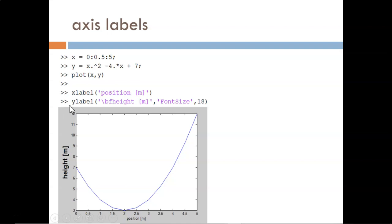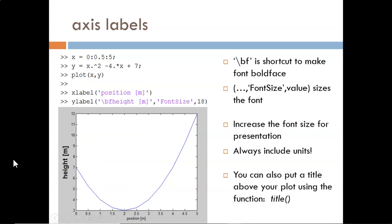For the x label, I only used one input argument, which is the text to be written. It writes correctly, but the label is hard to read. For the y label, I included the text and also a couple other elements to make it more readable. This backslash bf is a shorthand modifier to make the text boldface. The name-value pair of font size and 18 increases the font size to 18. The y label is noticeably better. Get in the habit of making these sorts of font adjustments.